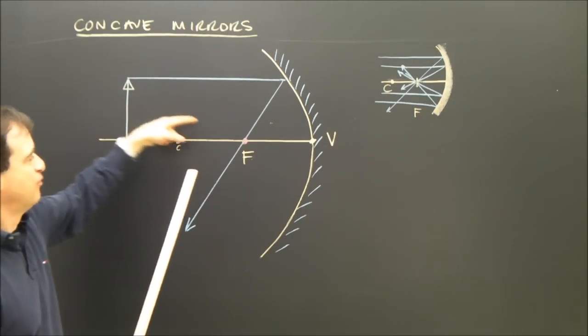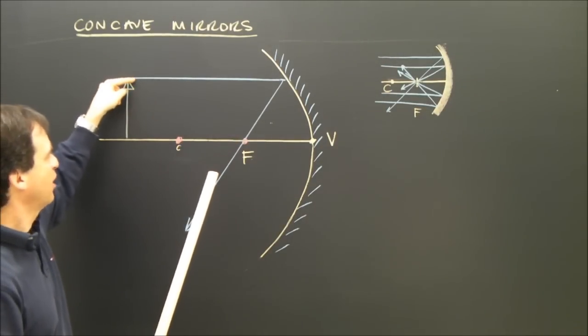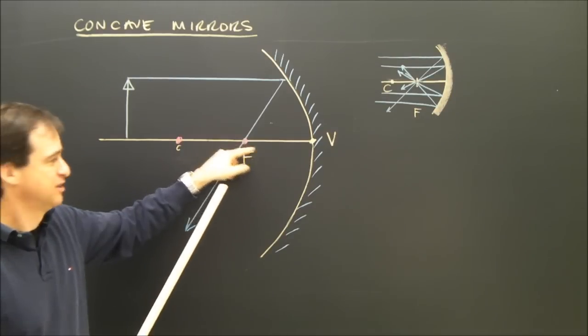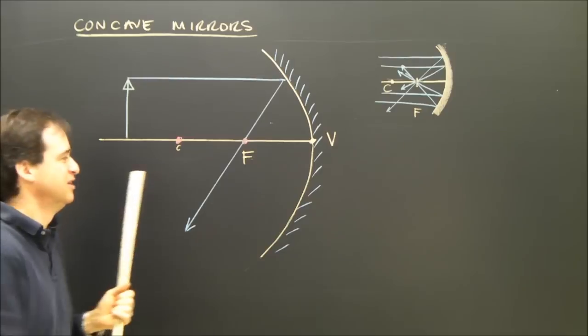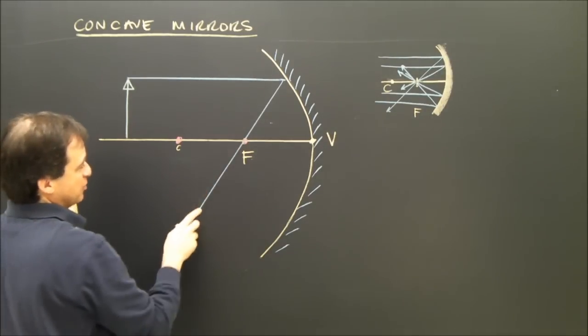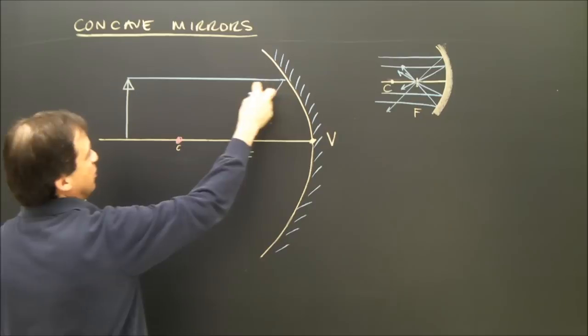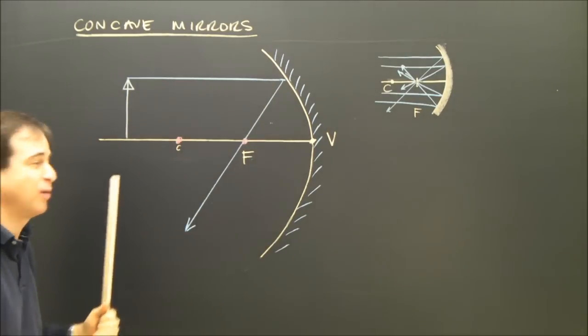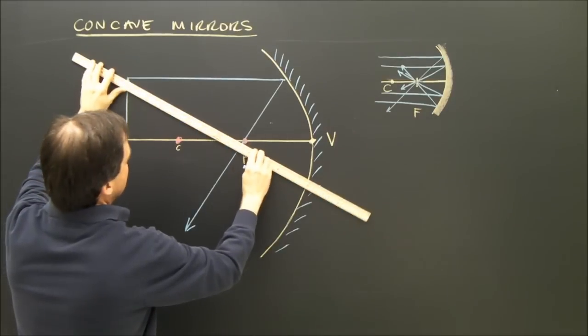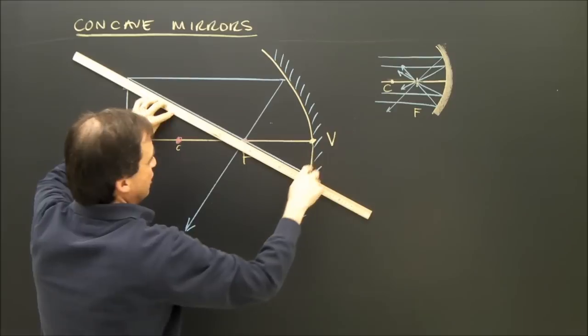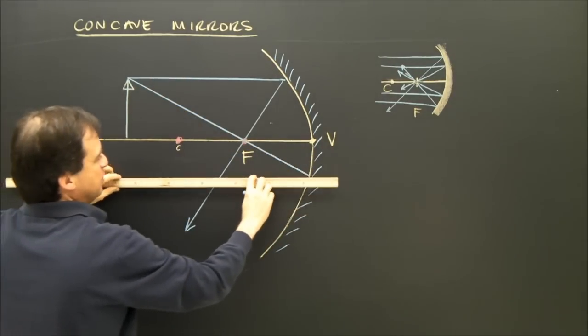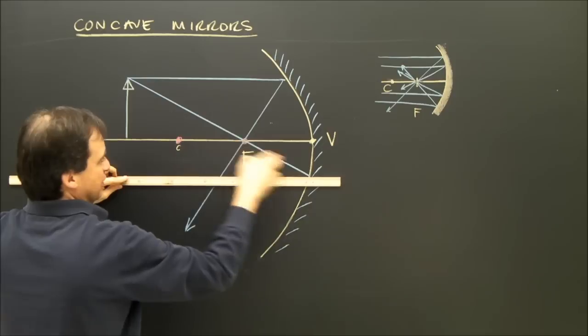The second ray is the focal ray. It's going to go from my object, through the focus, hit the mirror, and then go parallel. It's really the opposite of this. This is a light ray that if you trace it backwards, it goes through the focus, hits the mirror, and goes parallel. So I'm using that property. I'm going to shine a light ray through the focus. It's going to hit the mirror. Where it hits the mirror, it bounces off parallel to that axis.